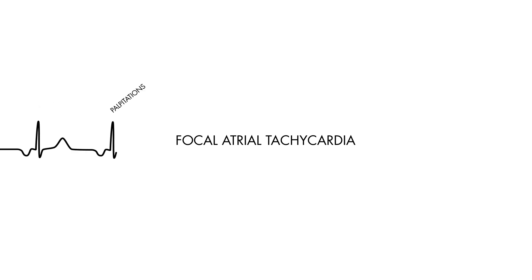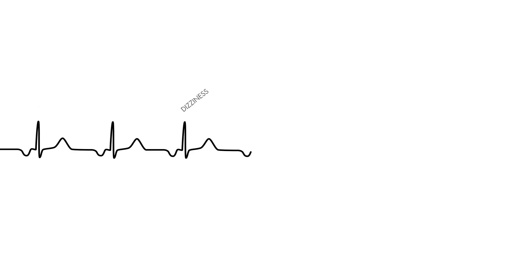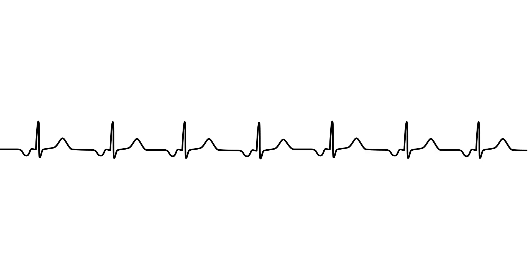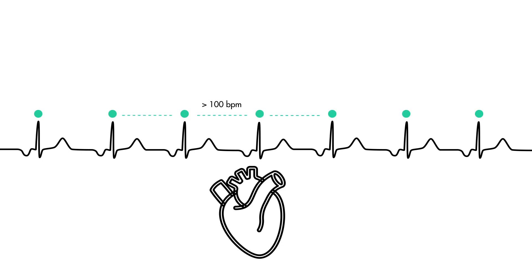Focal atrial tachycardias are typically benign, often paroxysmal, and self-limited arrhythmias, which can lead someone to experience chest pain, palpitations, dizziness, and lightheadedness, or some may even be asymptomatic. It is a tachycardia, meaning heart rate is greater than 100 beats per minute, and its electrical focus originates from one area within the atria that is outside or not originating from the sinoatrial node.